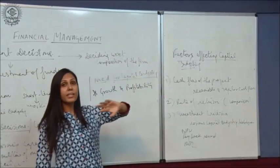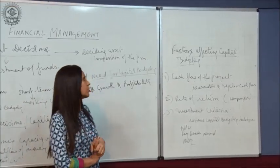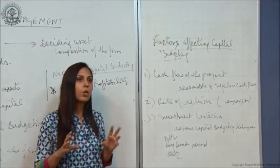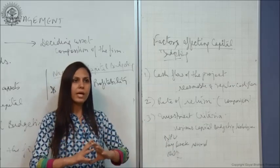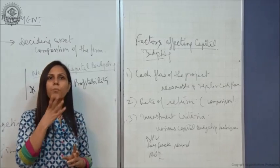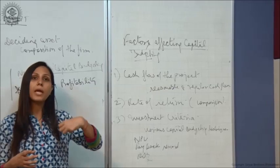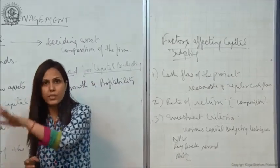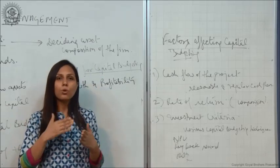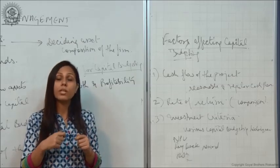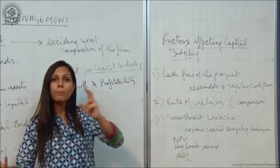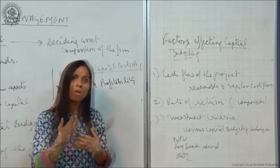Now, the factors affecting capital budgeting — what are the factors that generally affect it? The first factor is the cash flow of the project. When we are deciding upon investment in a fixed asset, we look at the cash flow of that particular project. For example, if I am going to invest in a particular project, what return and profit am I making? I might have two or three options — Project A, Project B, Project C. Before deciding on the best project, I will look at the cash inflow — whether I am getting a reasonable and regular cash flow from Project A, B, or C.